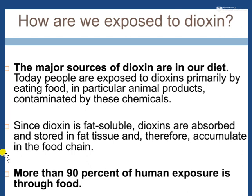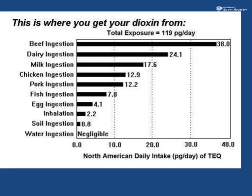Exposure to dioxins comes mainly by eating food — particularly animal products — contaminated with these chemicals. Since dioxins are fat-soluble, they are absorbed and stored in fat tissue and accumulate in the food chain. More than 90% of human exposure is through food. Exposure through water and soil is negligible because dioxins are not soluble in water.